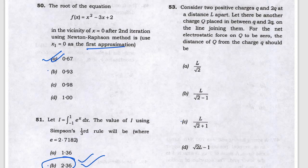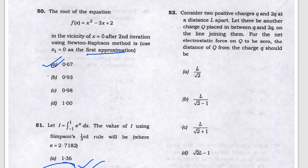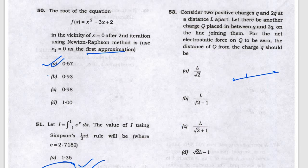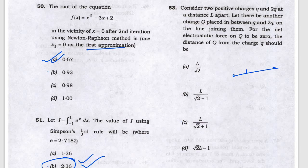Two charges are given — charges 2q and q — and they are asking for the stable equilibrium distance. The answer will be C.